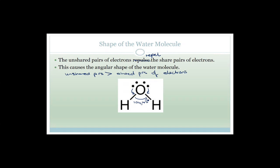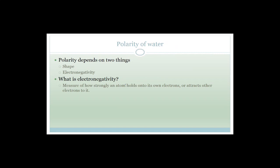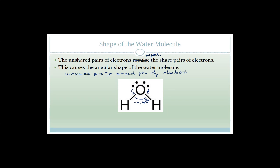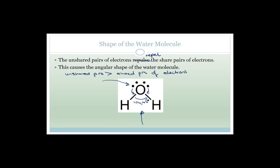Why is the angular shape important? Because it changes the polarity. Polarity depends on two things: the shape and the electronegativity. If you approach from one side you see only the oxygen, and if you approach from the other side you see only the hydrogens — that is why shape affects polarity. Oxygen has a greater attraction to electrons, so it is slightly negative, and the hydrogens are slightly positive. That is to do with electronegativity.